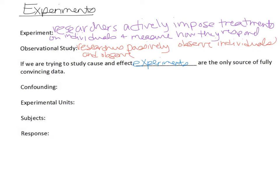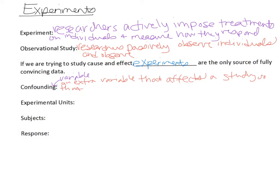The next term is confounding, which can be a little confusing when you first see it. A confounding variable is an extra variable that affects a study, causing the results you get to not reflect the actual results as they would be. Confounding usually occurs because of poor experimental design, and we'll talk about good experimental design later on.